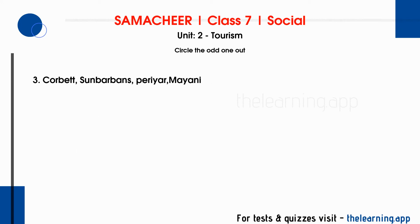Third question: Corbett, Sundarbans, Periyar, Mahabalipuram — the odd one out is Mahabalipuram. Corbett, Sundarbans, and Periyar are national parks, while Mahabalipuram is not a national park.